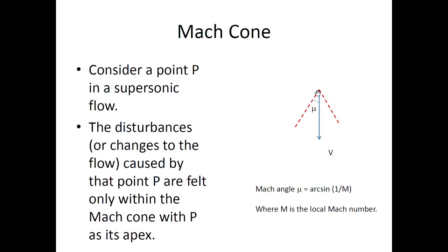The Mach cone: disturbances generated at a point are confined within the Mach cone. Sound spreads spherically but can never outgrow the Mach cone boundary. The Mach angle μ is defined such that sin(μ) = A/V∞ = 1/M, so μ = arcsin(1/M). Since disturbances are confined to the Mach cone, smaller disturbances from body placement mean lower wave drag and lower sonic boom.